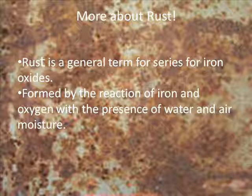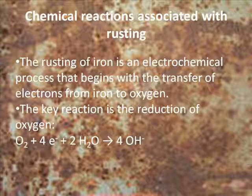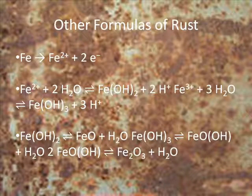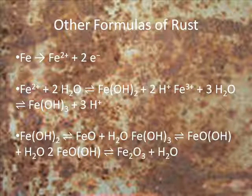More about rust: rust is a general term for a series of iron oxides formed by the reaction of iron and oxygen with the presence of water and air moisture. The rusting of iron is an electrochemical process that begins with the transfer of electrons from iron to oxygen. The key reaction is the reduction of oxygen. These are other formulas of rust.